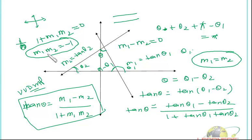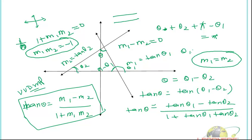So in this session we discussed the various forms of lines and this very important relationship. In the next session we'll be taking problems on these basic concepts. Do revise this session and be clear with the basics of coordinate geometry — then only you'll find the straight line topic to be very easy. I'll see you in the next session. Bye bye!